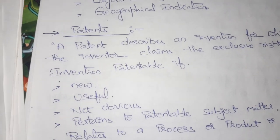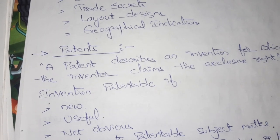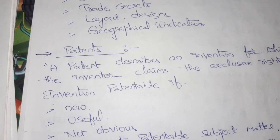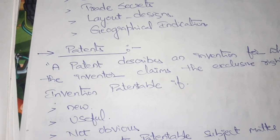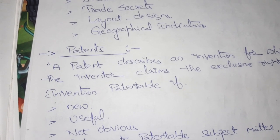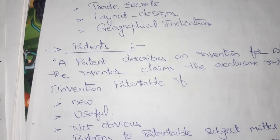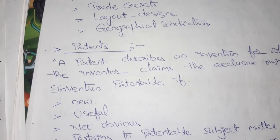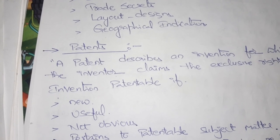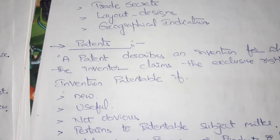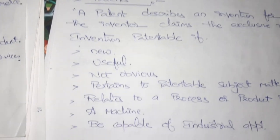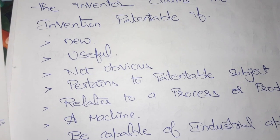A patent describes an invention for which the inventor claims the exclusive right. This means that if you created any new product or new machine, you are going to take security for it. If you take patent rights on that product or machine and release it into the market, no other person can make the same copy of that product or machine.